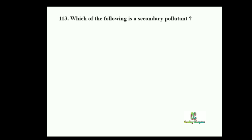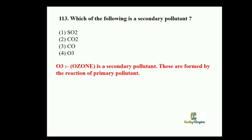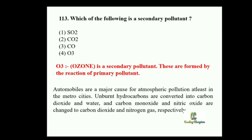Next question: Which of the following is a secondary pollutant? Option 1: Sulphur dioxide. Option 2: Carbon dioxide. Option 3: Carbon monoxide. Option 4: O3. O3 is a secondary pollutant, formed by the reaction of primary pollutants. The primary pollutants are sulphur dioxide, carbon dioxide, and carbon monoxide.